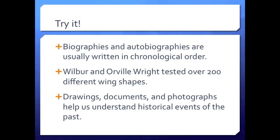Now you try it. Let's see if you can find the compound subjects in these sentences. Sentence number one — what's the compound subject? 'Biographies and autobiographies are usually written in chronological order.' Biographies and autobiographies is the compound subject of this sentence. In this case, biographies and autobiographies are both nouns, and they are sharing the same predicate.